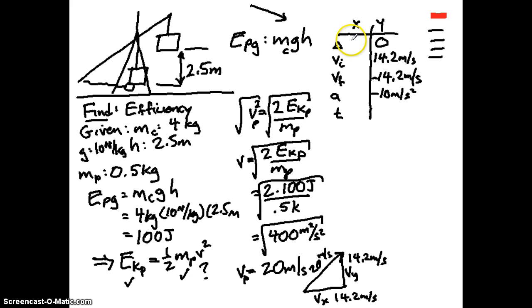Over on the x side, this is what we're looking for. Our velocity initially is 14.2 meters per second. Our final velocity is going to be the same. Our acceleration in the x direction is zero. So we can figure out time to unify this.